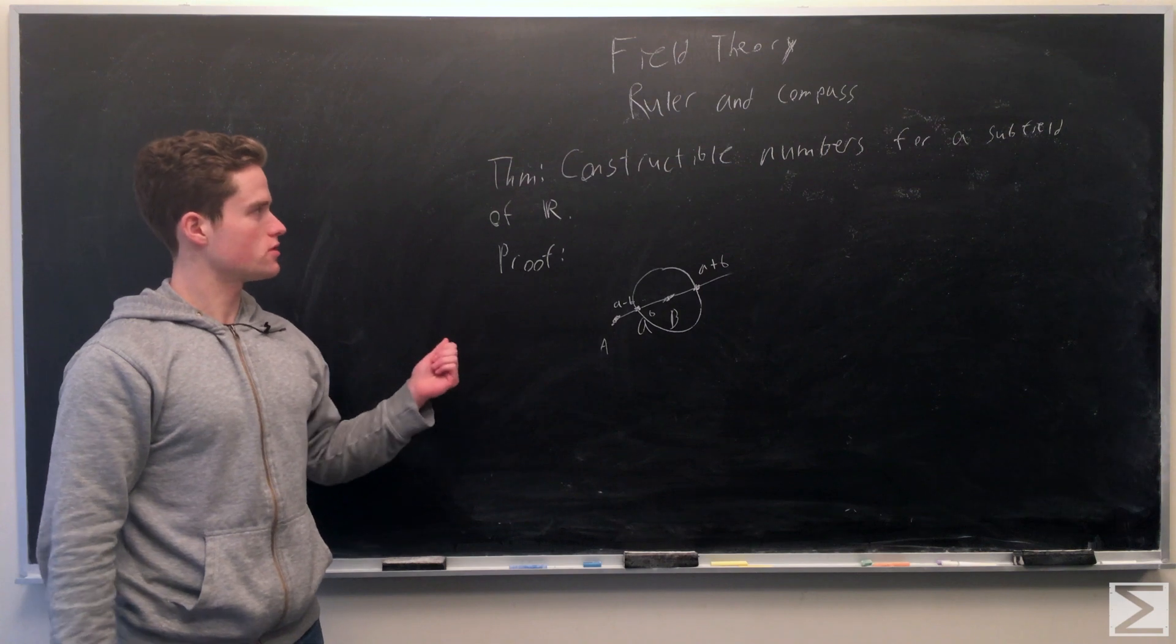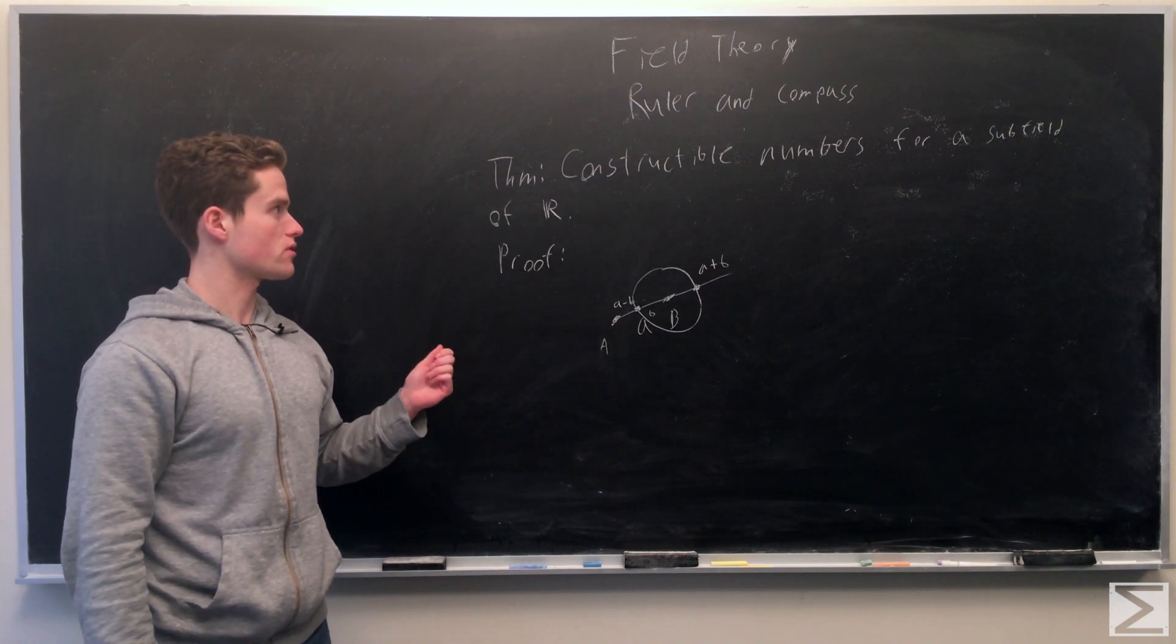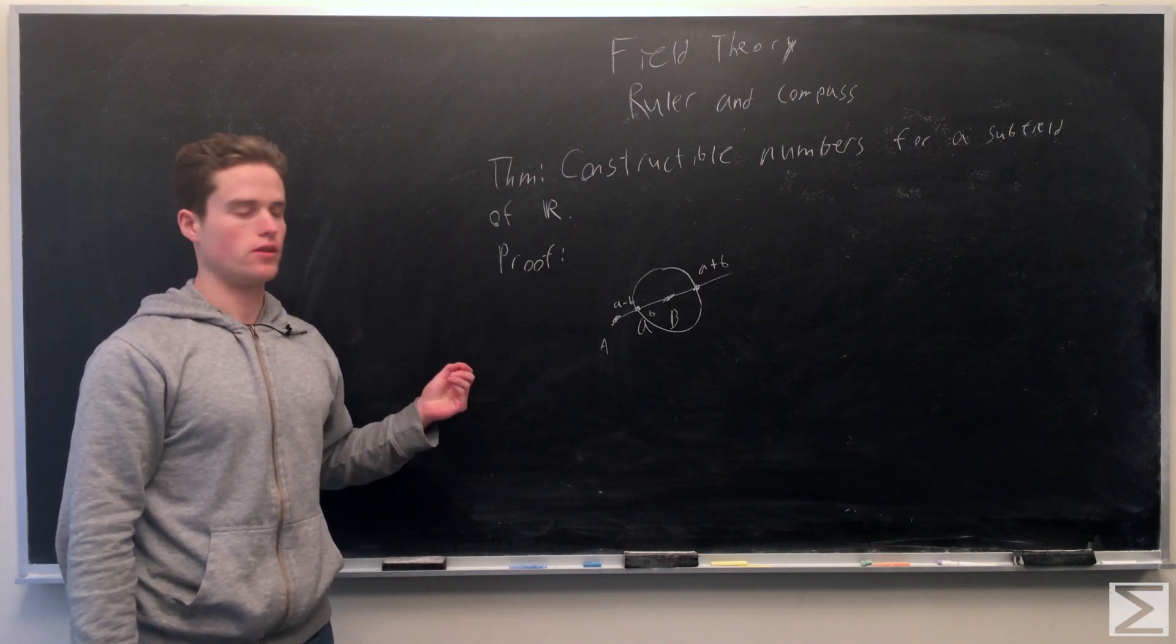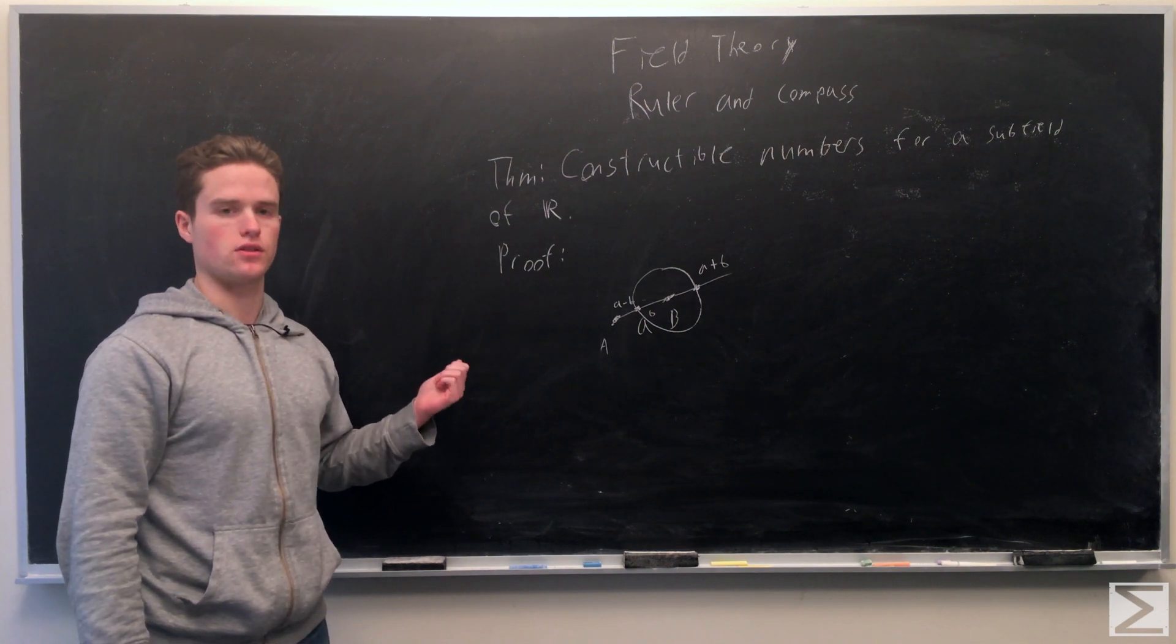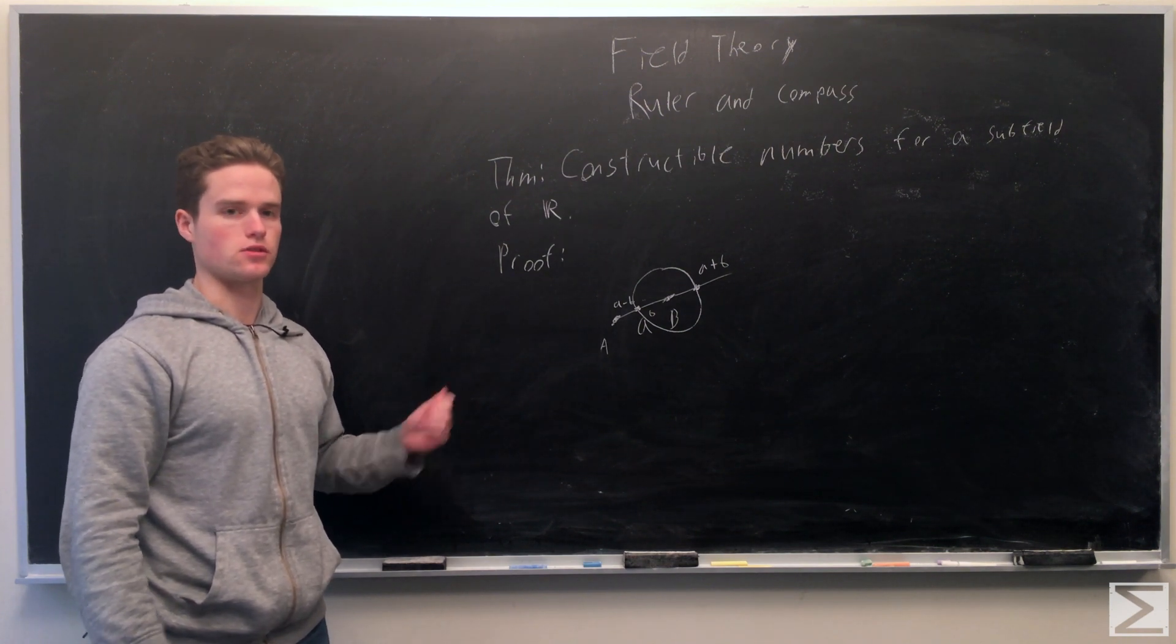Constructible numbers form a subfield of R. We just want to show their addition and subtraction is closed, their multiplication is closed, and we have inverses.